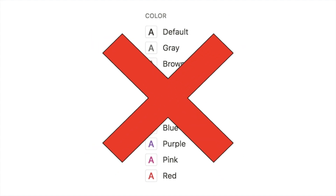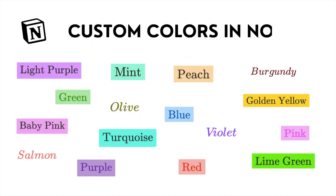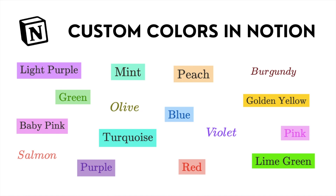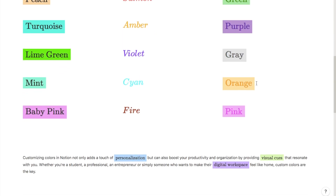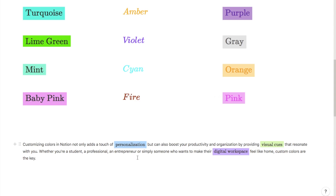If you've ever felt limited by the colour palette in Notion, then you're in the right place because today I'm going to be showing you how to add custom colours in Notion. Here are some examples of what you'll be able to do by the end of this video: adding a custom background colour to text, changing the colour of the text, incorporating both at the same time, and using these colours within text.